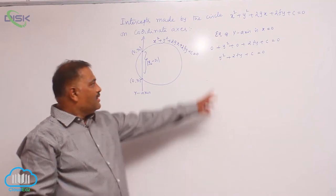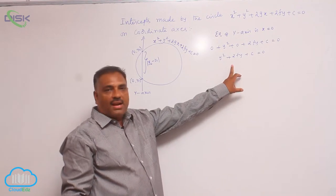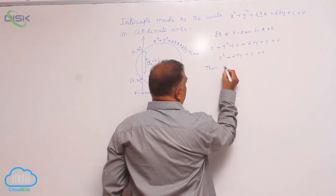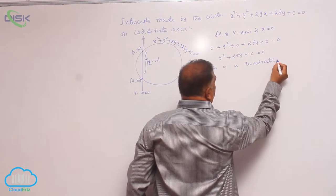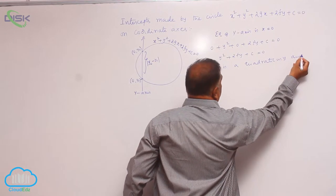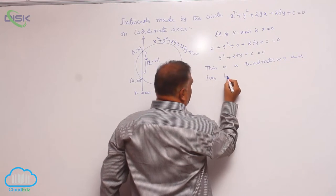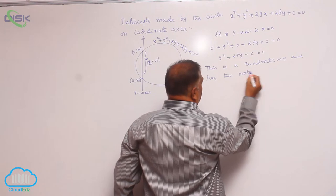Clearly this is going to be a quadratic in y, and has two roots y₁ comma y₂.